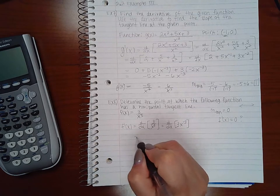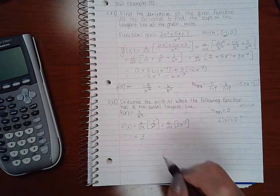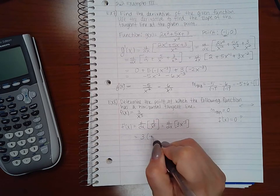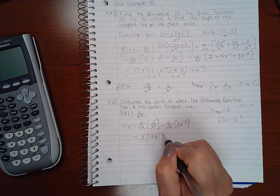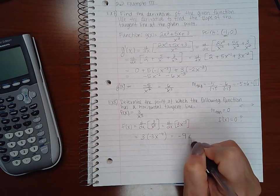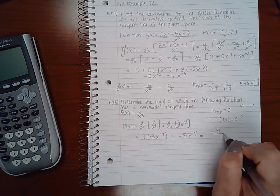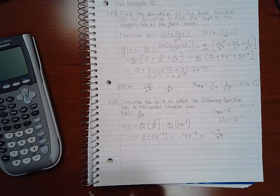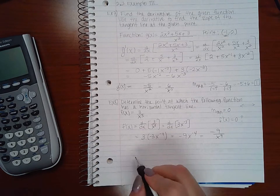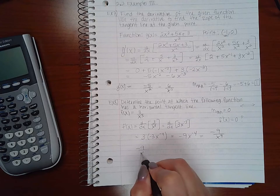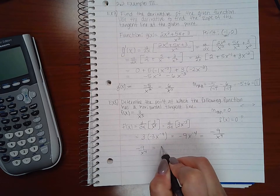And then I'm going to keep the multiplier in the front, and then bring down my power and decrease the power by 1. And then go back and rewrite it as a fraction. So that is my derivative, and I want to figure out where this derivative equals 0.